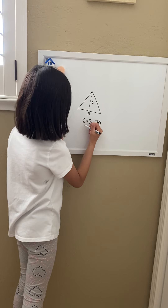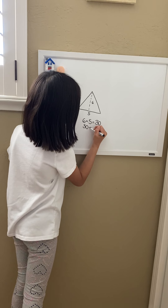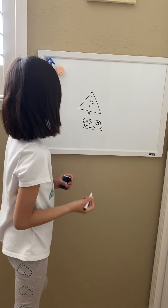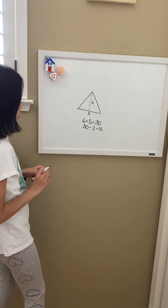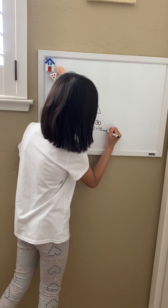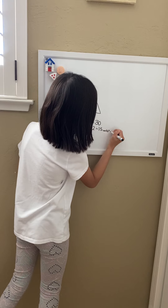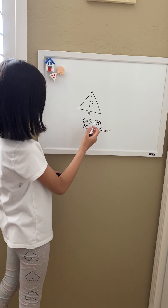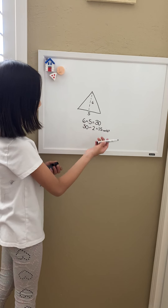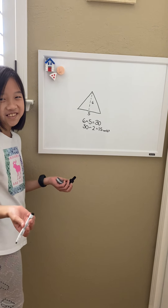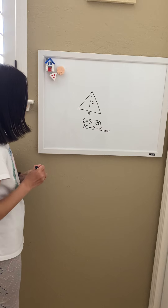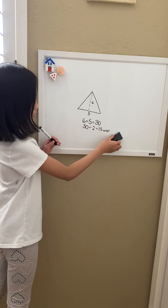Thirty is the product of the height and the base. Next, we divide it by two: thirty divided by two is equal to fifteen. So the area of this triangle is fifteen units squared. When you use 'units,' it's because you don't know the specific units of the length, so you just write 'units.'